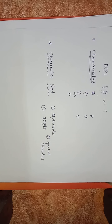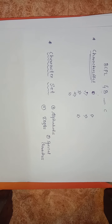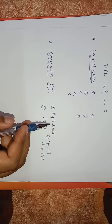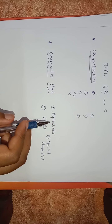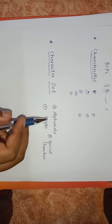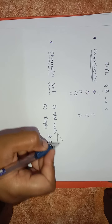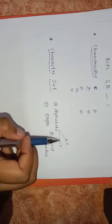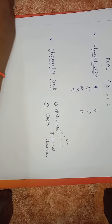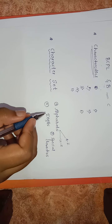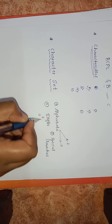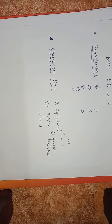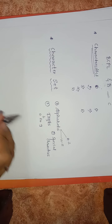Let's look at these three character groups in detail. Alphabets include both uppercase and lowercase letters — uppercase A to Z and lowercase a to z. Digits include numbers from 0 to 9. These are all characters of the C language.